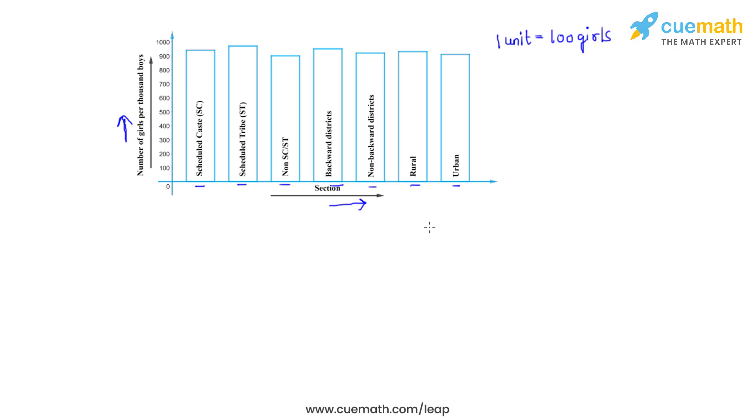Now as we can see from this bar graph representation, we observe that the number of girls per thousand boys is highest for the ST category, which is this, so this is the highest. Also, what we can observe is that the number of girls per thousand boys is higher in rural areas than in urban areas. The number of girls per thousand boys is also higher in backward districts than in non-backward districts. The number of girls per thousand boys is lowest for the urban section.